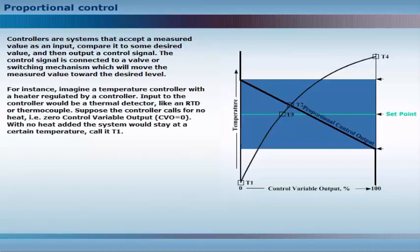For instance, imagine a temperature controller with a heater regulated by a controller. Input to the controller would be a thermal detector, like an RTD or thermocouple. Suppose the controller calls for no heat, i.e., zero control variable output. With no heat added, the system would stay at a certain temperature.